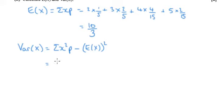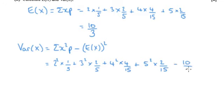So that's two squared times a fifth, plus three squared times two fifths, four squared times four fifteenths, five squared times two fifteenths, and then we're going to subtract ten thirds squared.